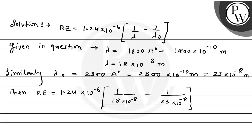Taking 10 to the power minus 8 common: 1.24 into 10 to the power minus 6 divided by 10 to the power minus 8, times 1 upon 18 minus 1 upon 23.